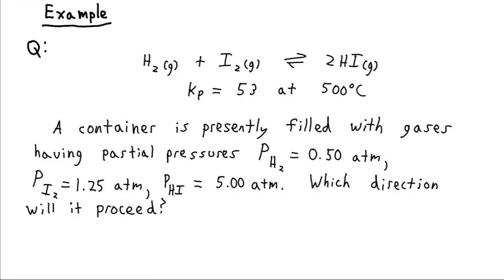All right, let's say that we are presented a container which is filled up with hydrogen, iodine, and hydrogen iodide gas related by this equilibrium reaction, which has a KP of 53 at 500 degrees Celsius. And we perform some measurements and find out that the partial pressure of the H2 is 0.5 atm, of the iodine is 1.25 atm, and of the hydrogen iodide is 5 atm. Which direction is this reaction going to proceed, or has it already reached equilibrium?